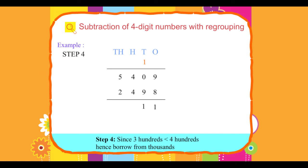Step 4: Since three hundreds is less than four hundreds, hence borrow from thousands. Three hundreds plus ten hundreds, borrowed thousand, equals thirteen hundreds. Thirteen hundreds minus four hundreds equals nine hundreds.